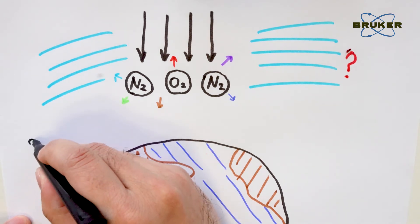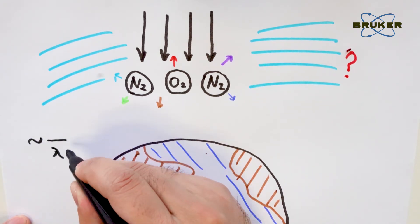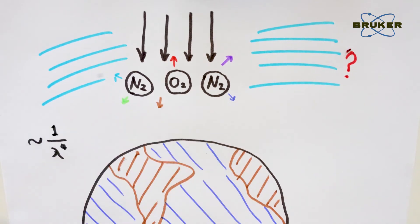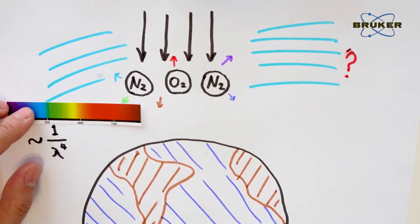According to Lord Rayleigh, the efficiency of this process is inversely proportional to the fourth power of wavelengths, which means light with shorter wavelengths scatter much more often.